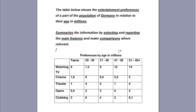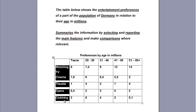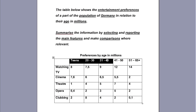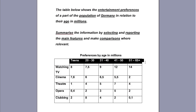Now let's have a look at the table. The vertical column here shows the types of entertainment: watching TV, cinema, theatre, opera, clubbing. And the other line over here shows the age of the people — it starts from teens and goes on until 65 plus and on. In this case I think it is easier if we read the table by age.